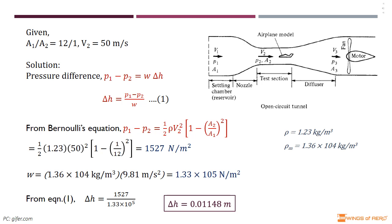By multiplying the density and g, we get w equals 1.33 × 10⁵ N/m². Now substitute this w and pressure difference in equation 1. We get the required height difference Δh equals 0.01148 meters.